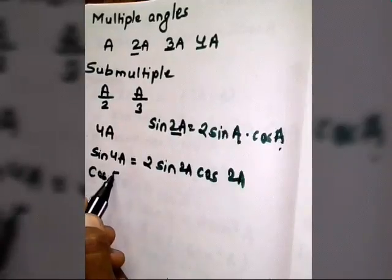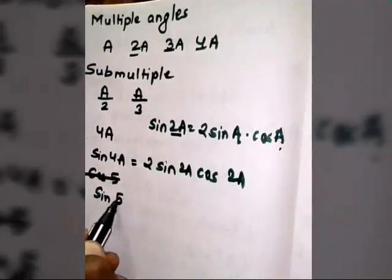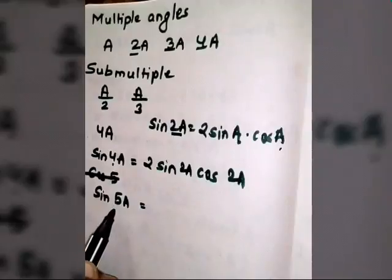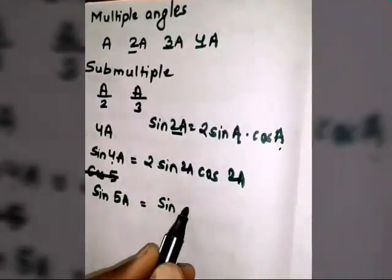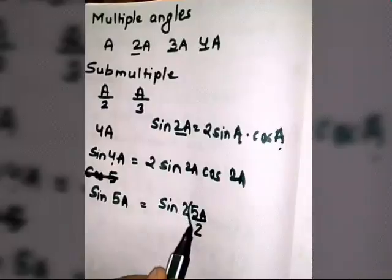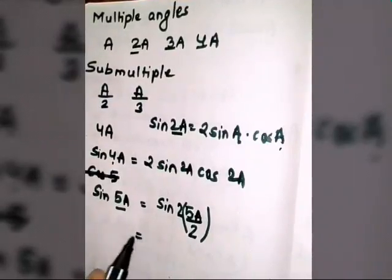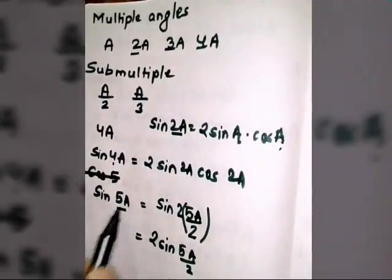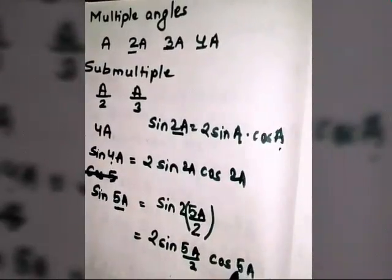Let's also consider the formula of sin 5A. Now this is not an even number, so finding the exact half is slightly different. We apply the same concept: express it as 2 sine of half the angle times cosine of half the angle. Half of 5A is 5A/2, so the formula will be 2 sin(5A/2) cos(5A/2).